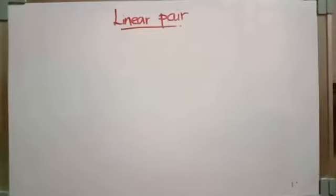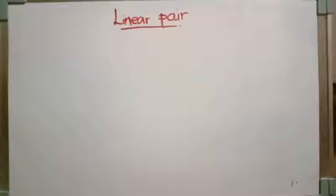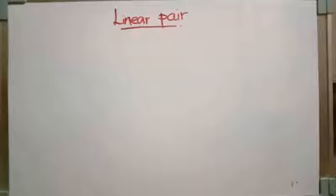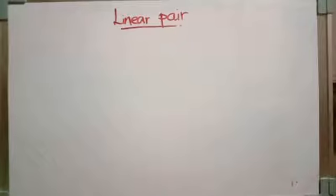Good morning. Today we will discuss about a few pairs of angles. The first pair is linear pair. In the last class we discussed about complementary angles, supplementary angles, and adjacent angles. All these angles were a pair of angles — two angles said to be adjacent, complementary, or supplementary. So here also, a pair of angles forms a linear pair.